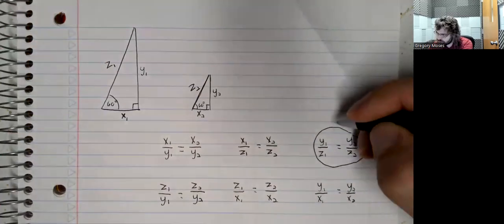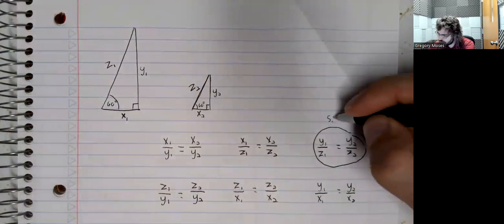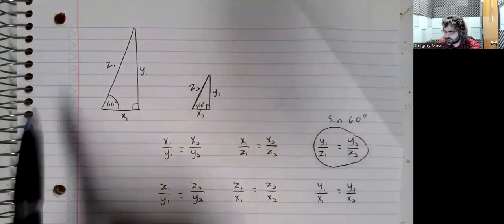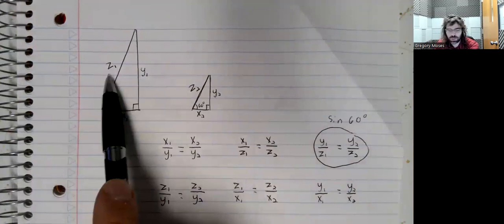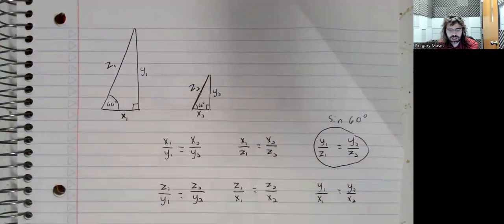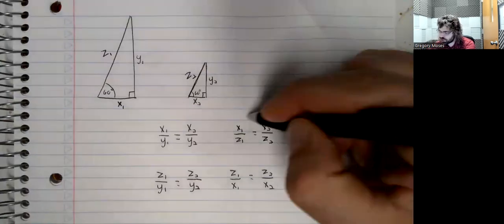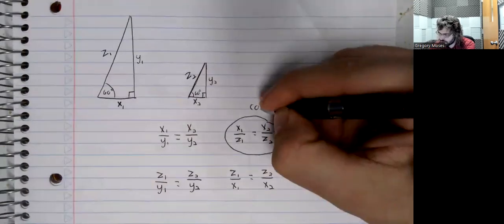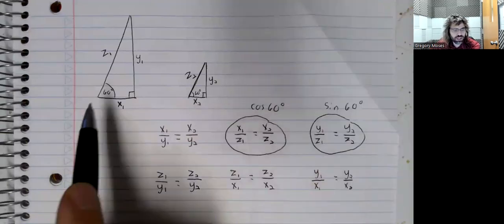Well, y1 over z1, this way of dividing one side by another, is the sine of 60 degrees. The opposite side is y1, the hypotenuse is z1. Or over here, the opposite side is y2, the hypotenuse is z2. This ratio is the cosine of 60 degrees, the adjacent side over the hypotenuse.